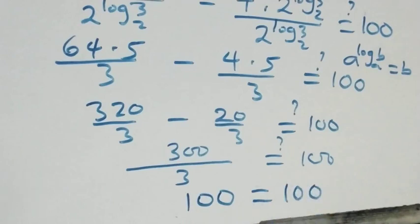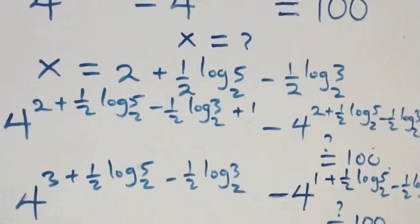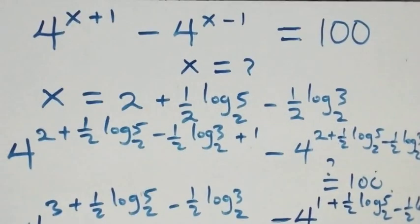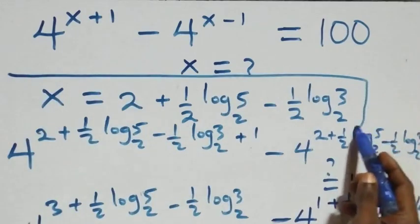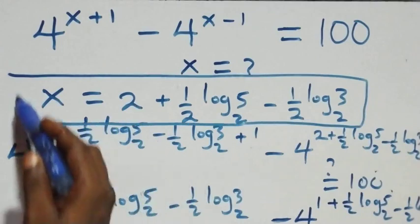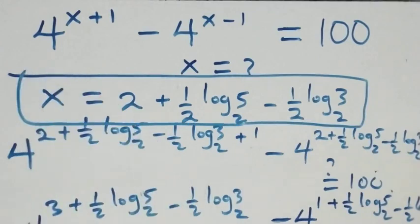Now we have the left-hand side equal to the right-hand side. We conclude that x equals 2 plus one-half log base 2 of 5, minus one-half log base 2 of 3, satisfies the given problem. Thank you for watching. Don't forget to subscribe for more videos, turn on notifications, share this video, give it a thumbs up, and put your comments. See you in the next class.